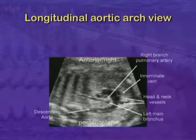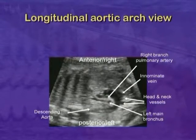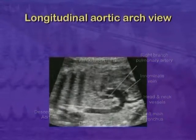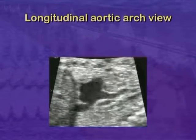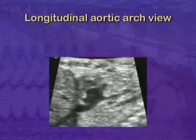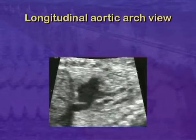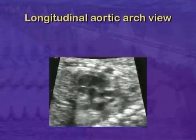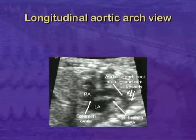It is important to distinguish the aortic arch from other structures in adjacent sagittal planes. The true aortic arch gives branches to the head and neck. The continuity of pulmonary artery, arterial duct and descending aorta, referred to as the ductal arch, does not.